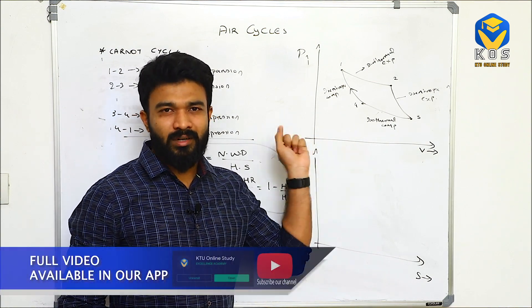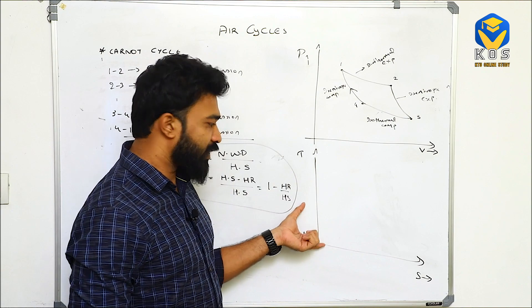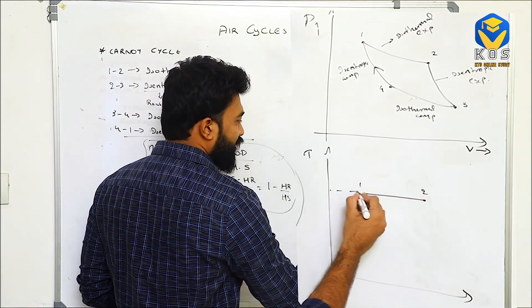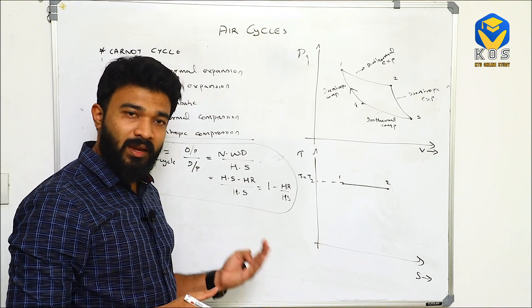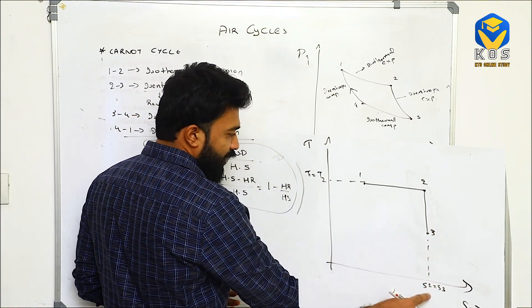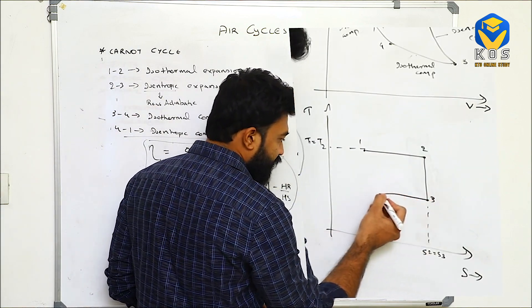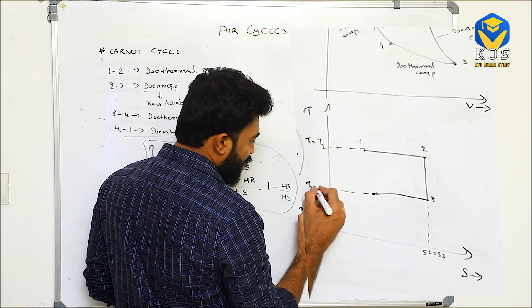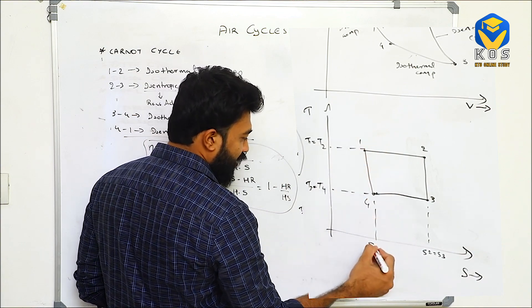On the TS diagram: process 1 to 2 is isothermal, so temperature is constant — T1 equals T2. Process 2 to 3 is isentropic, so entropy remains constant — S2 equals S3, shown as a straight vertical line. Process 3 to 4 is isothermal compression, so T3 equals T4. Process 4 to 1 is isentropic, so S4 equals S1.